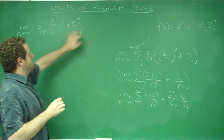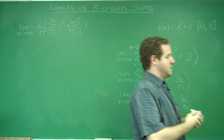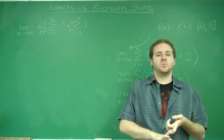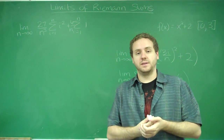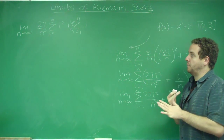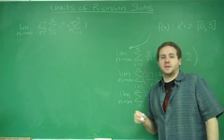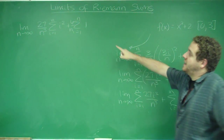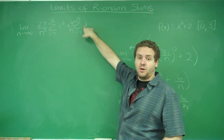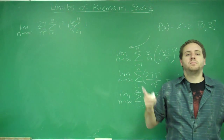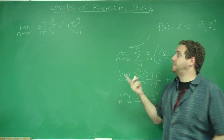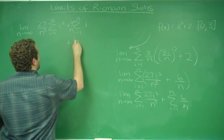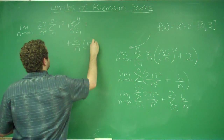We're ready to substitute in formulas for what these sums are. Your teachers are going to give you the sum of i, the sum of i squared, the sum of i cubed — those are not things you need to memorize. The sum of 1 is easy: you're adding 1 to itself n times, so 1 plus 1 plus 1 up to n times is just n. So the whole term 6 over n times the sum of 1 is just 6 over n times n.